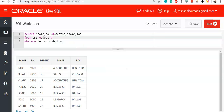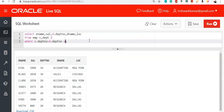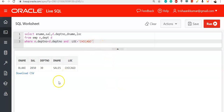Now we will see some more queries related to inner join. Display employees who are working in location Chicago from EMP and DEPT tables. Sometimes the interview question may not ask directly about inner join — they may give a query and ask you to display columns not present in a particular table, where that column is present in another table. Here, just add the condition 'and location = Chicago' to the existing join query. Only the matching records in Chicago are displayed.